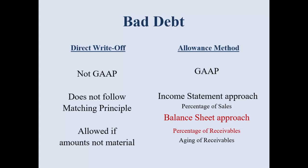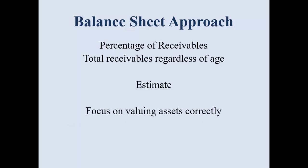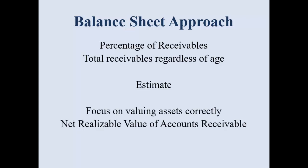We are going to look at the percentage of total receivables. The preferred GAAP method is the aging method, as it is felt to best match the expense. But the percentage of total receivables is also allowed. With percentage of receivables, you take total receivables regardless of age — that total can include accounts 60 days delinquent or 2 years delinquent. You take the total as an estimate, focusing on correctly valuing your assets to reach the correct net realizable value of accounts receivable. It is an end-of-year adjusting journal entry.